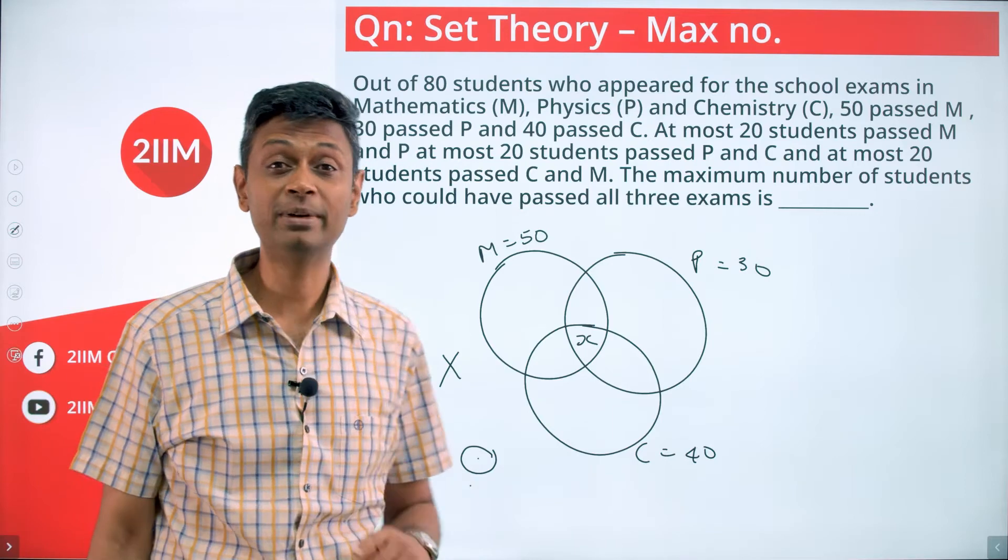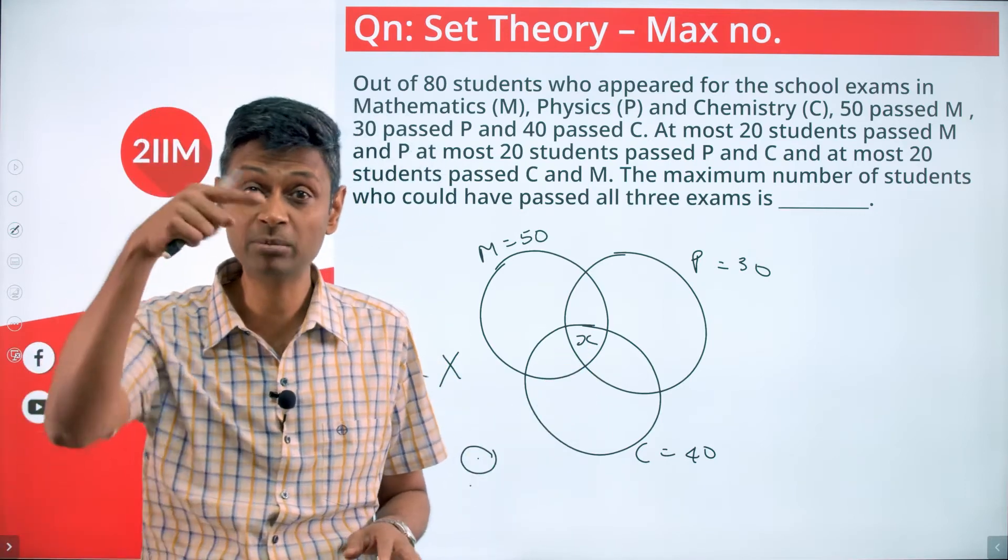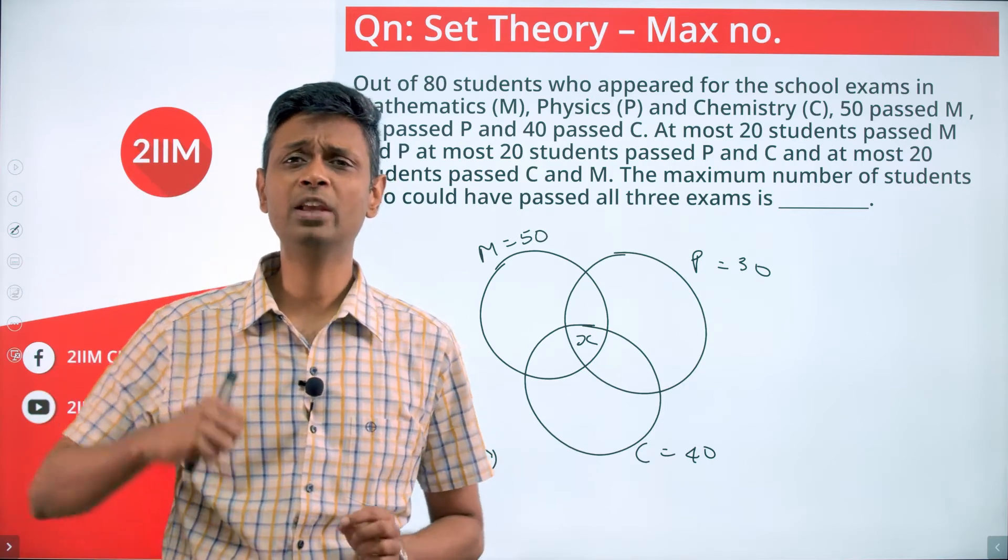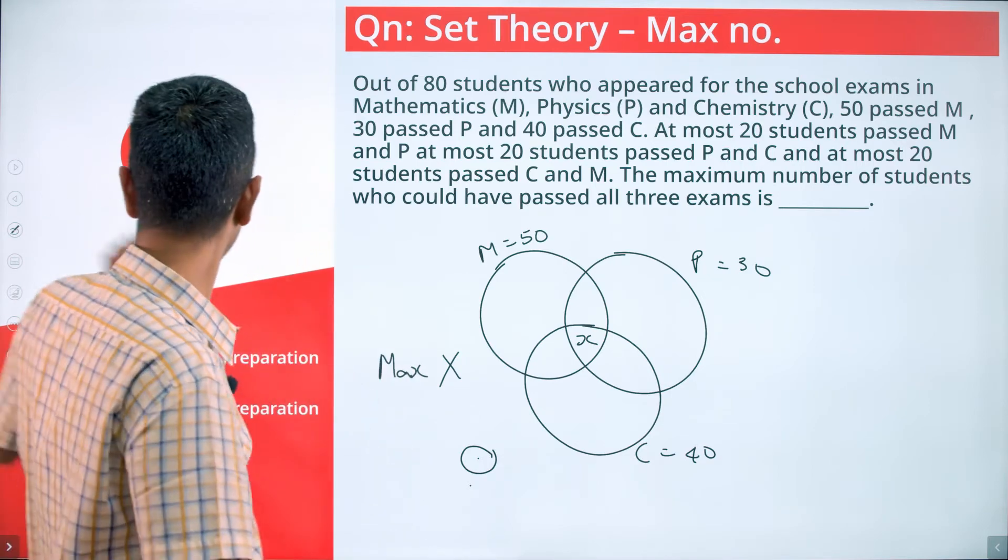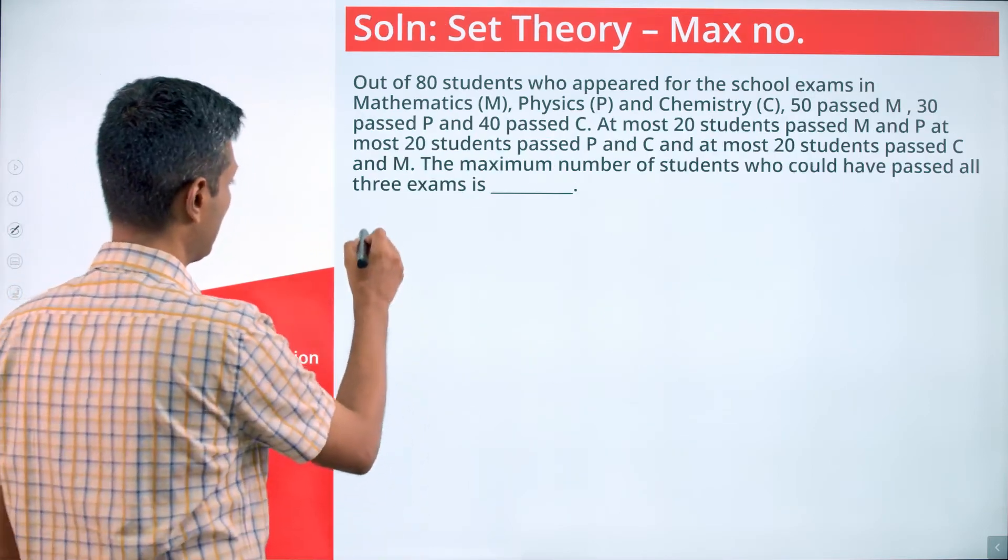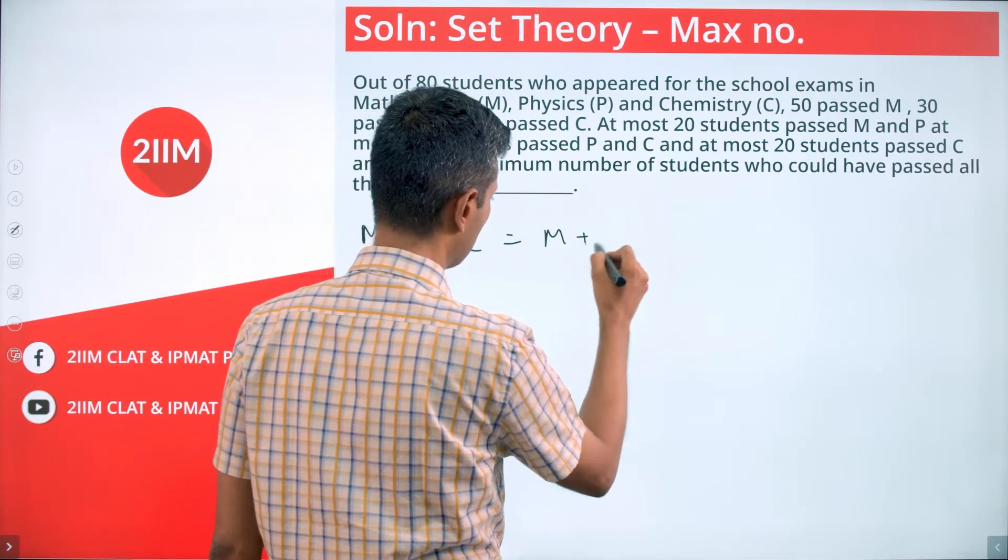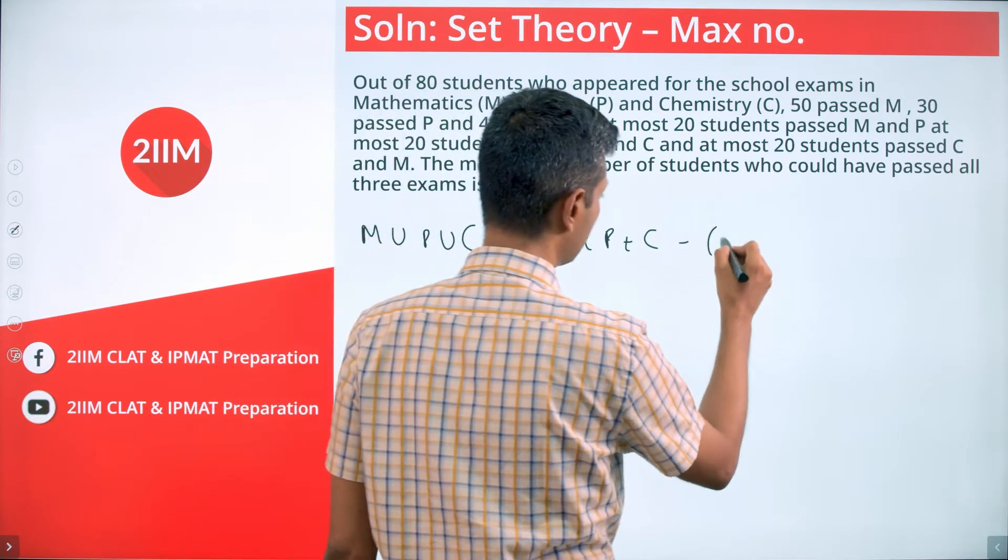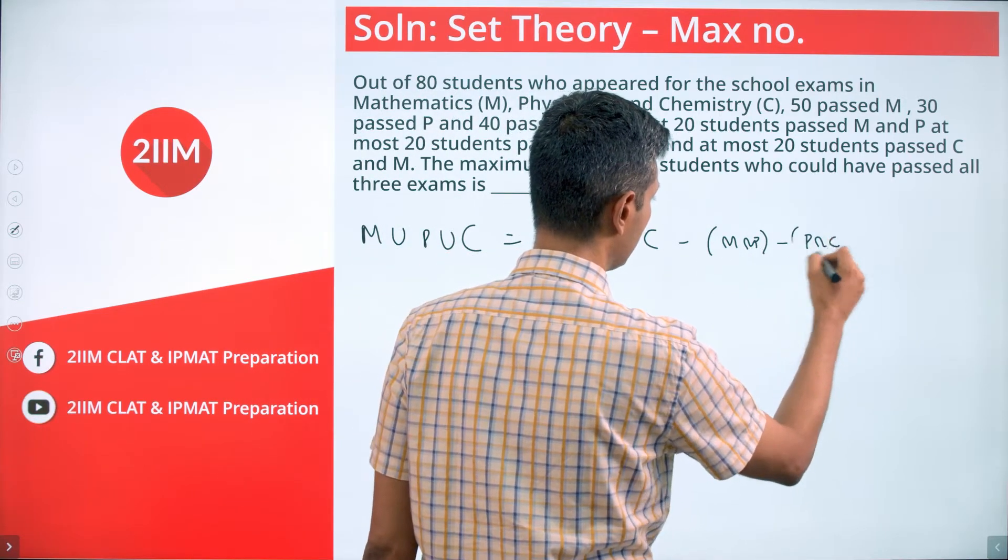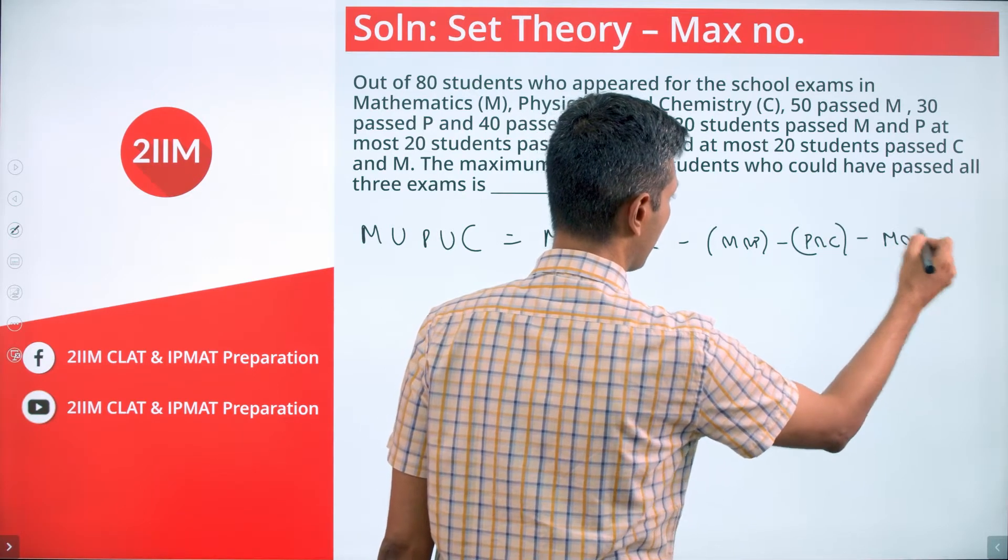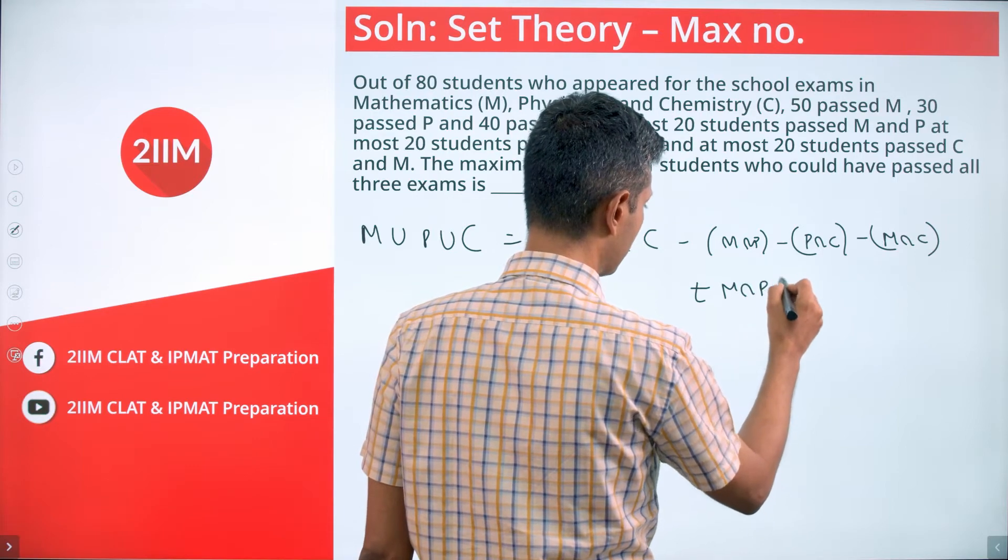If the total were not 80 but 78 or 75, it's quite clear that this number could go down. We want to find the maximum possible x, so I'm going to assume A union B union C is the maximum possible, which is 80. So now I'm going to go to the math of it. M union physics union chemistry is M plus P plus C minus M intersection P minus P intersection C minus M intersection C plus M intersection P intersection C.